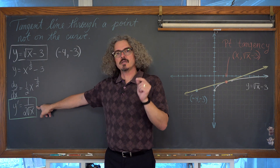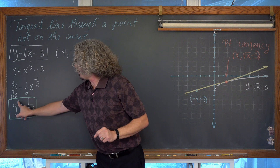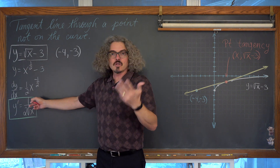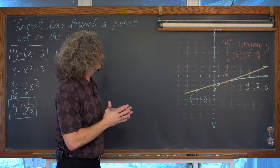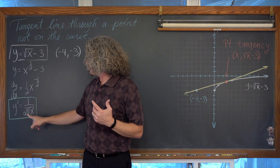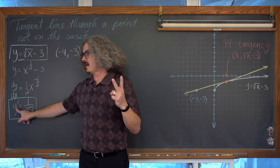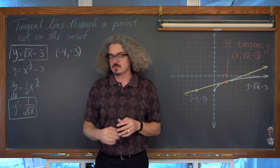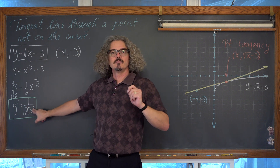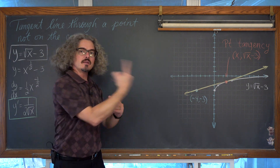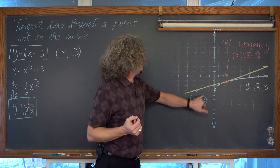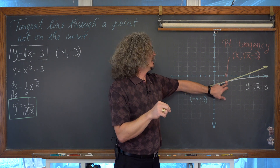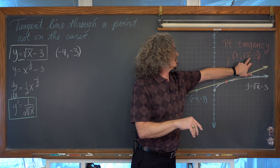We are getting somewhere. We have y prime, which will give us the slope of our original square root function via the expression 1 over 2 times the square root of x. Think of it as: I don't know what x is and I don't know what y prime is — I have an equation with two unknowns. When we have two unknowns, we usually need two equations. I can't find the slope because I don't have an x-coordinate for the point of tangency. But I have a point out in space not on the curve, and I have a point on the square root function — x, square root of x minus 3.